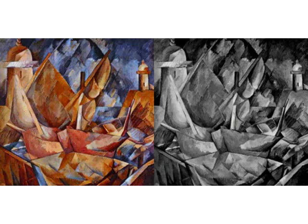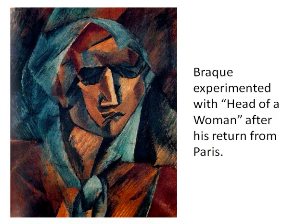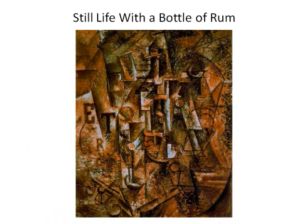In 1909, Braque made a trip to Le Havre and painted Harbour in Normandy, which shows how he had grasped the essence and potential of the Cubist technique. On his return to Paris in the autumn, Braque experimented with sculpture and produced Head of a Woman, his first attempt to transfer Cubism into the round. Braque first introduced lettering in 1909–1910 into Cubism paintings, which served both to emphasize the picture surface and to make the point that Cubist painting, like language, relies on signs to communicate.